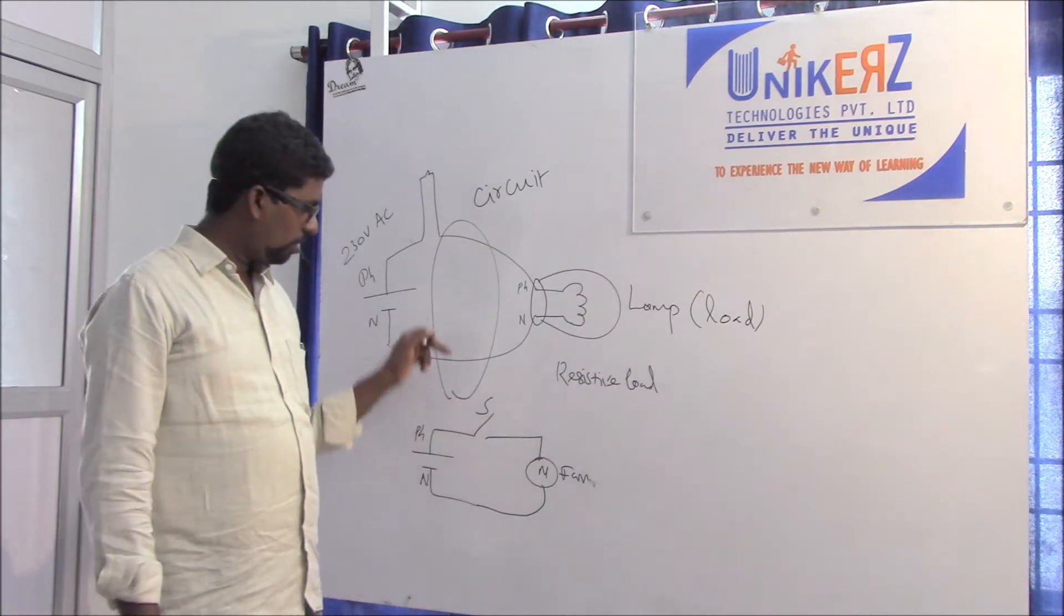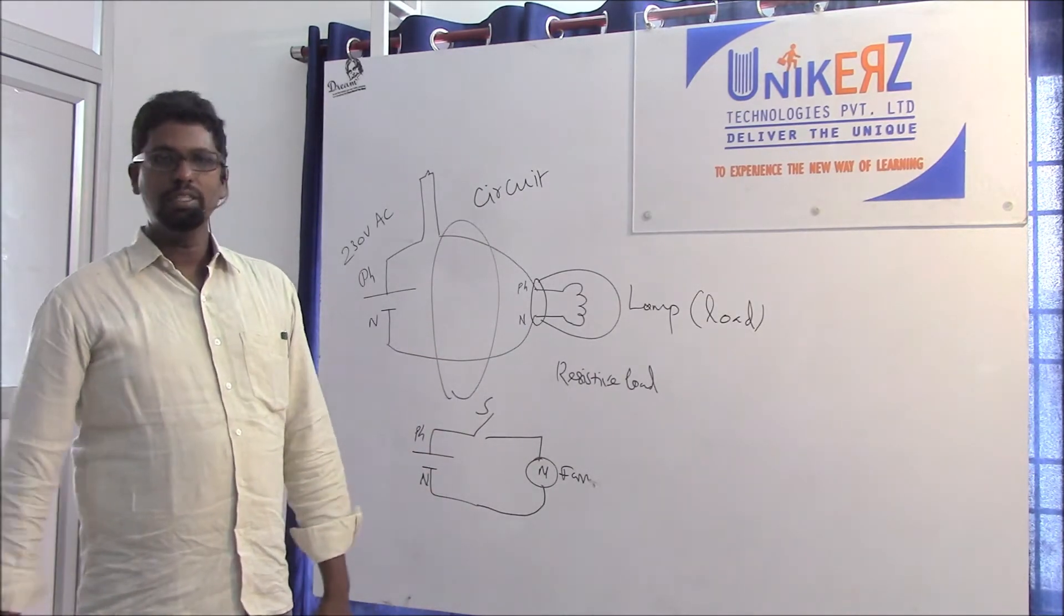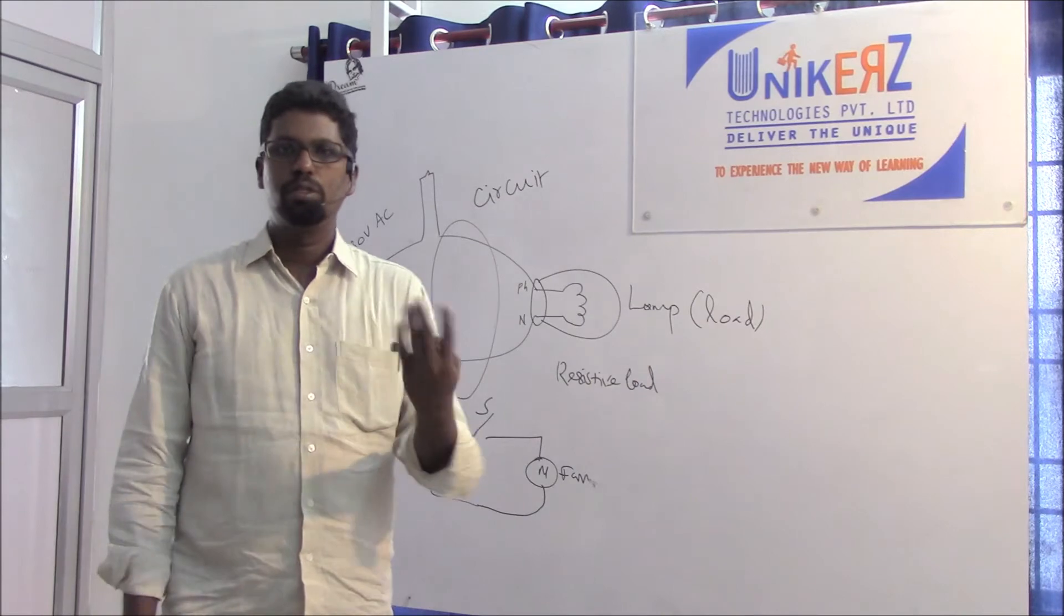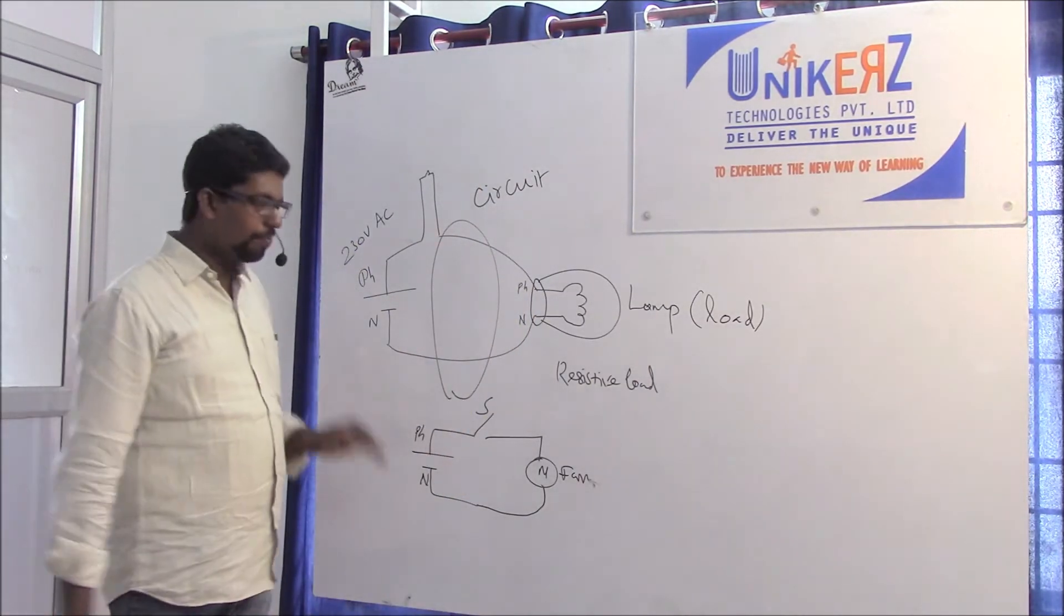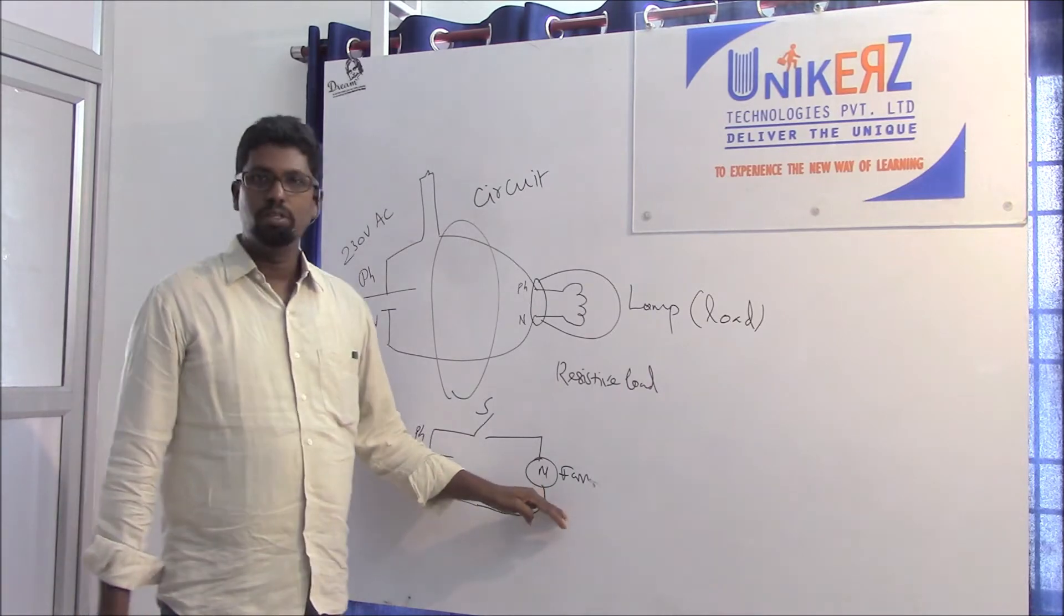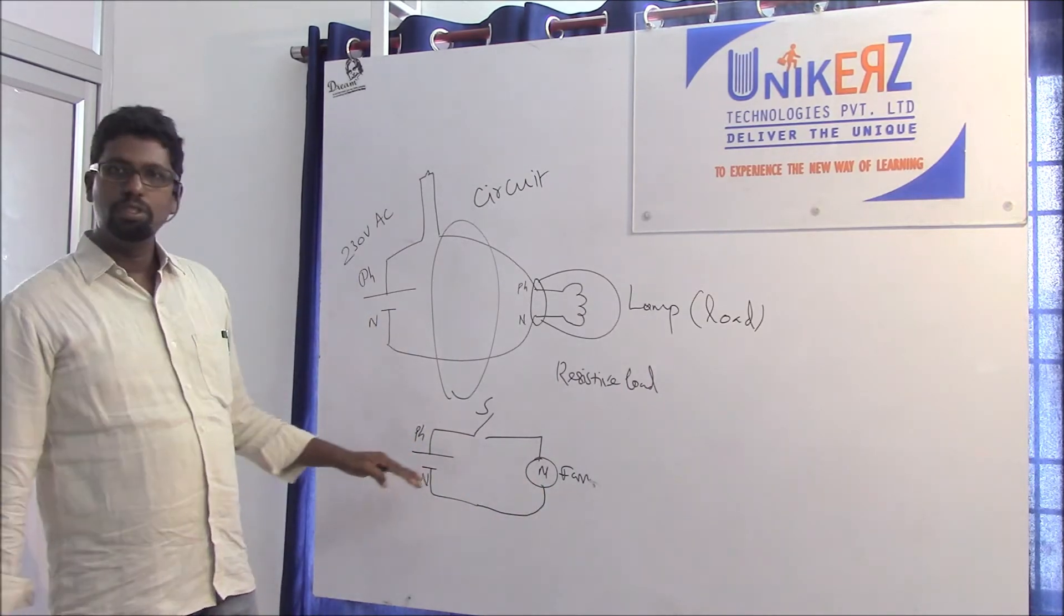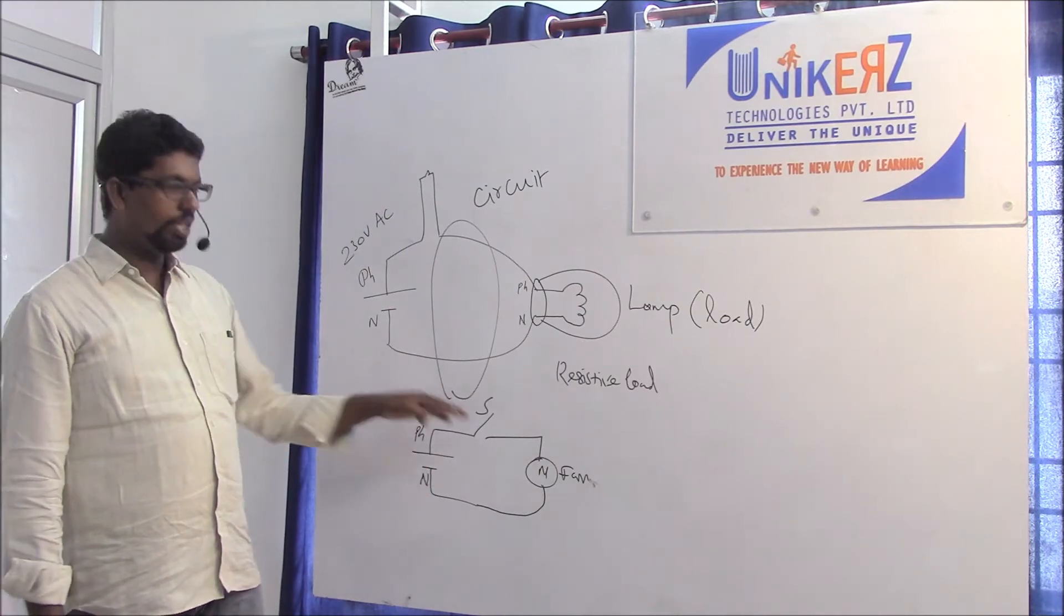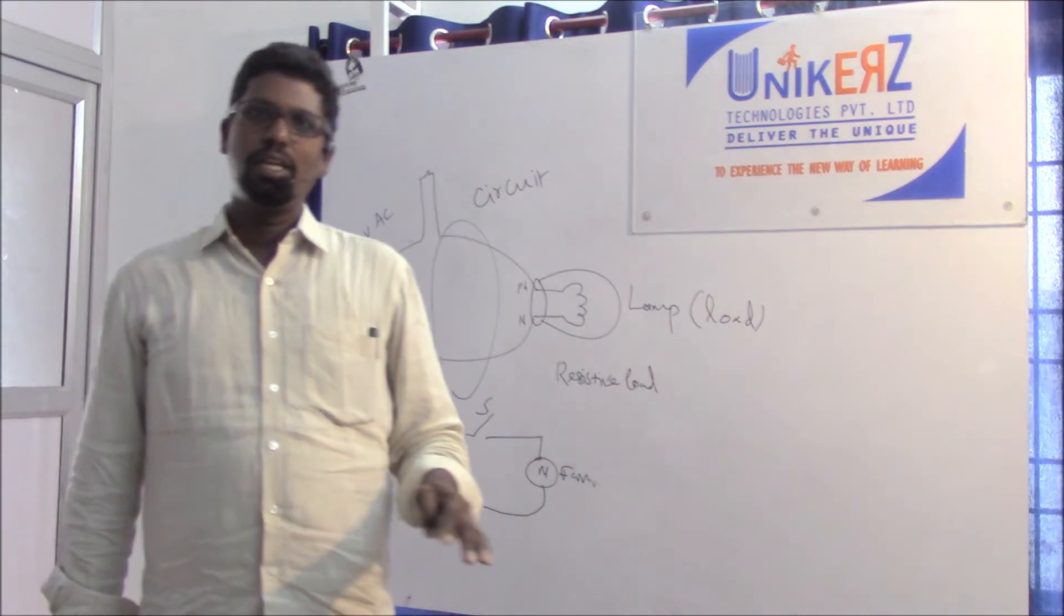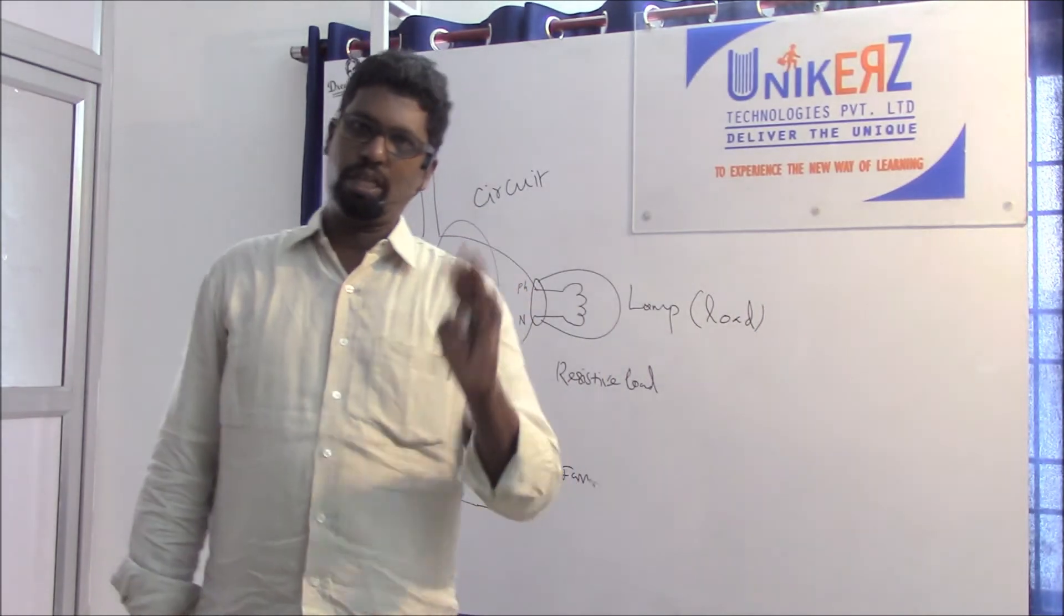Whenever the switch turn on, fan gets power. Control components in the combination - in the combination, current flow. That is called circuit.